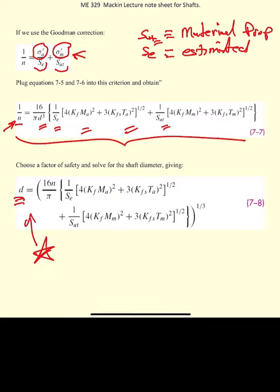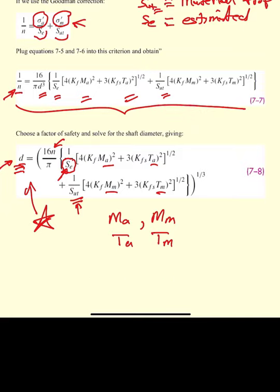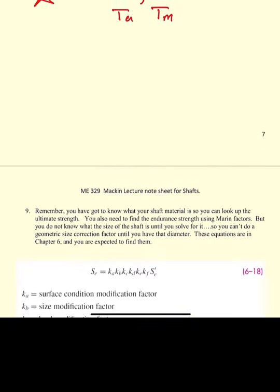The goal is a first estimate of shaft diameter for a given factor of safety against fatigue and a known loading state. You must calculate net moments and determine moment amplitudes and mean moments, calculate torques and determine torque amplitude and mean torque, look up the ultimate tensile strength for your shaft material, and calculate the endurance limit using the Marin factors. Note that the geometric size correction Marin factor requires D, so just set it equal to one for now. This is your task in this week's assignment.